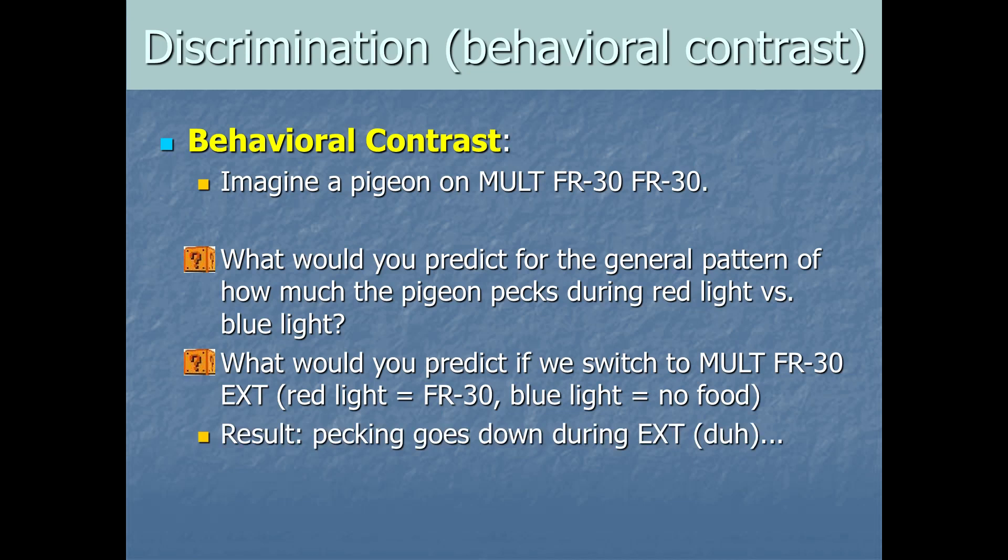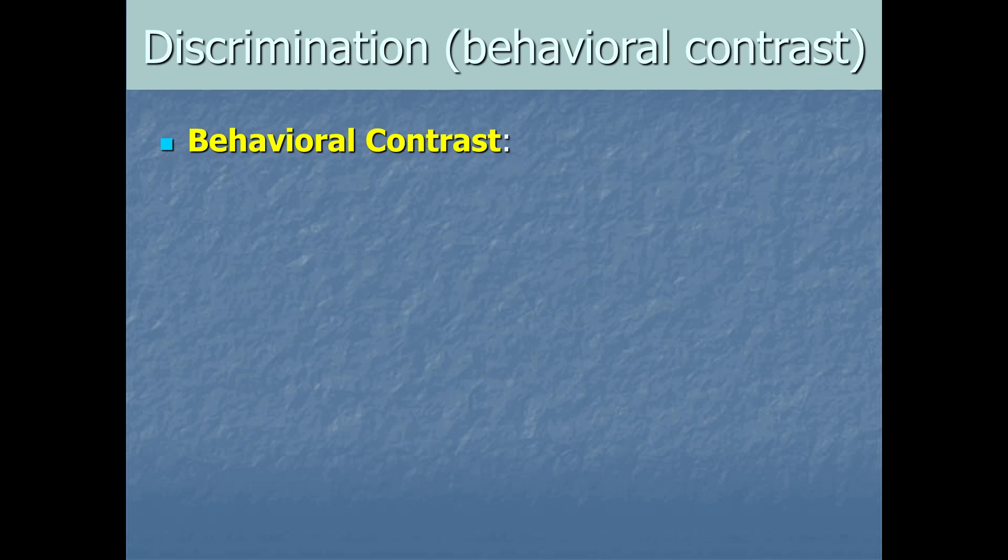Well, what happens is the pecking will go down during extinction. They'll stop responding much or at all when the blue light is on. That makes sense. But something weird happens here that you might not have predicted. Their rate of behavior actually goes up on the FR-30 schedule. They do a higher rate of behavior when the red light is on than they used to do for the same red light. Even though the schedule of reinforcement hasn't changed for the red light. That's really pretty surprising. We haven't changed the schedule of reinforcement in that context. But the pigeon's behavior changed in that context just due to what's happening in other situations in its life. What we described is actually an effect. It's called behavioral contrast.